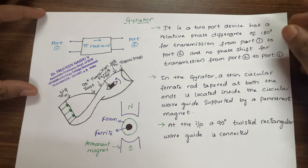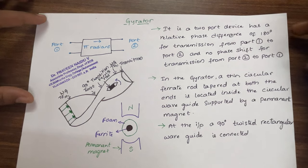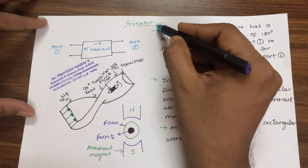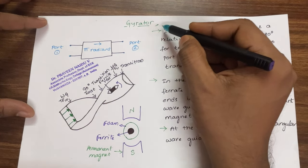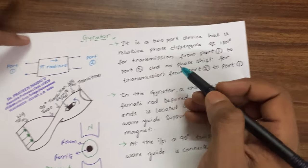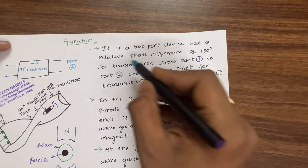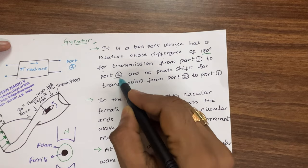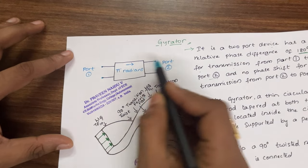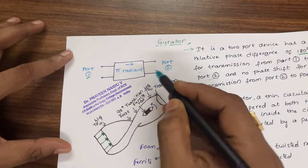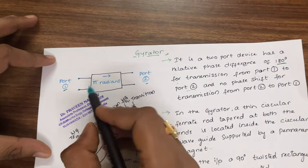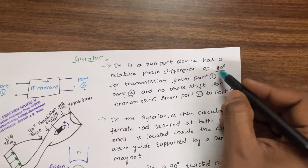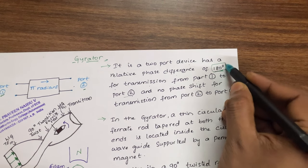Good morning everyone, welcome to the microwave engineering video lecture series. In today's video we are going to discuss a two-port gyrator. A gyrator is a two-port device which has a relative phase difference of 180 degrees for transmission from port 1 to port 2.